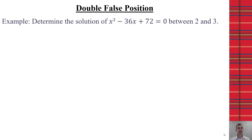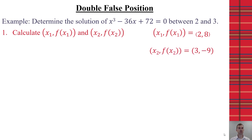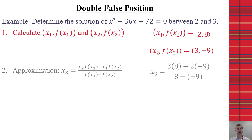For example, take x³ − 36x + 72 = 0, looking for the solution between two and three. Substituting x = 2 gives a corresponding value of 8, and x = 3 gives negative 9 — so we're on opposite sides of zero. Plugging these two ordered pairs into the double false position formula and simplifying gives 42/17, which is approximately 2.47.